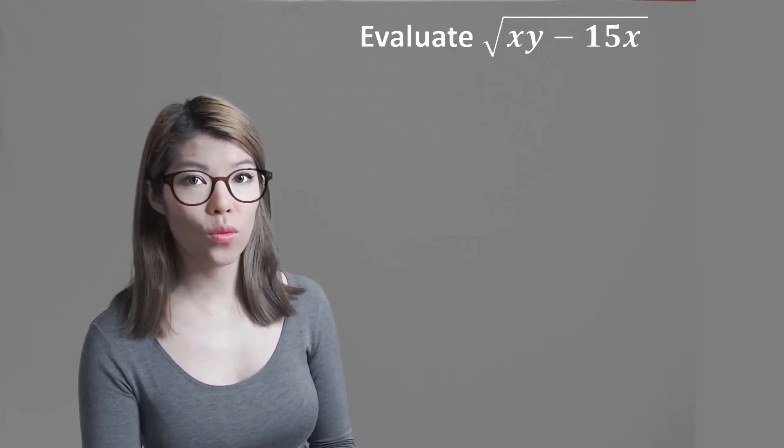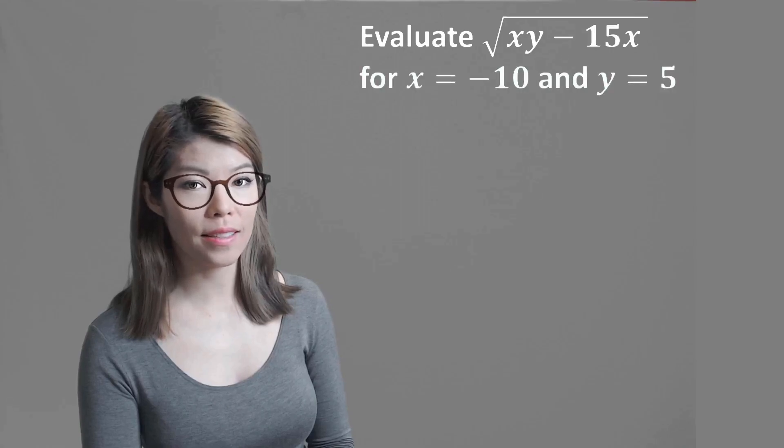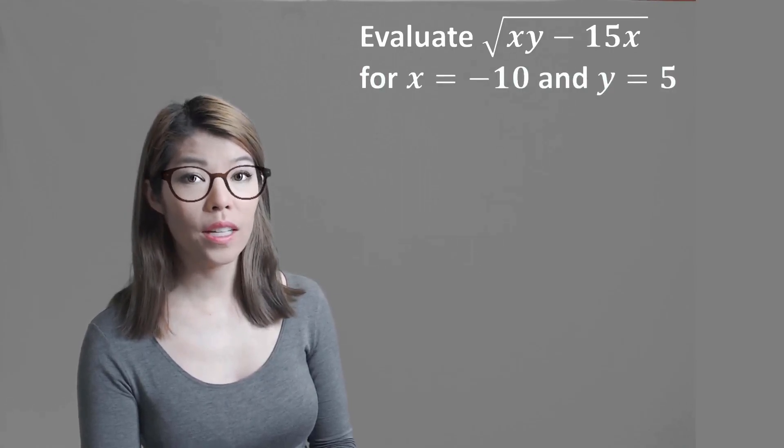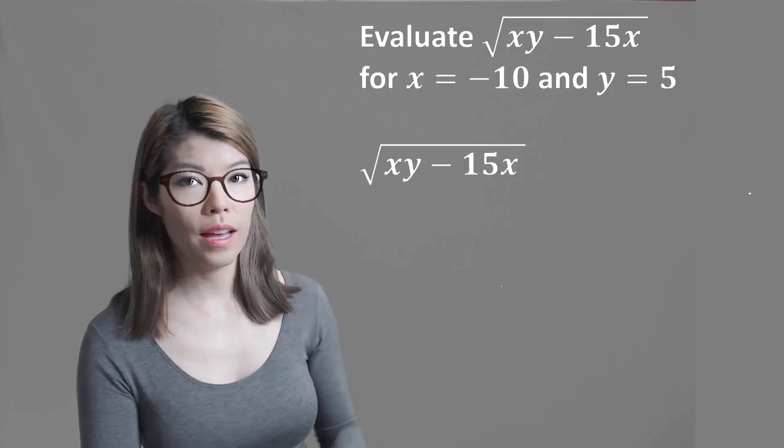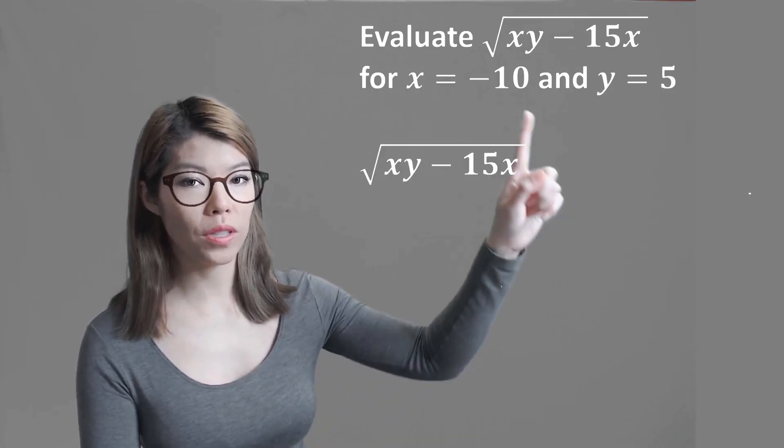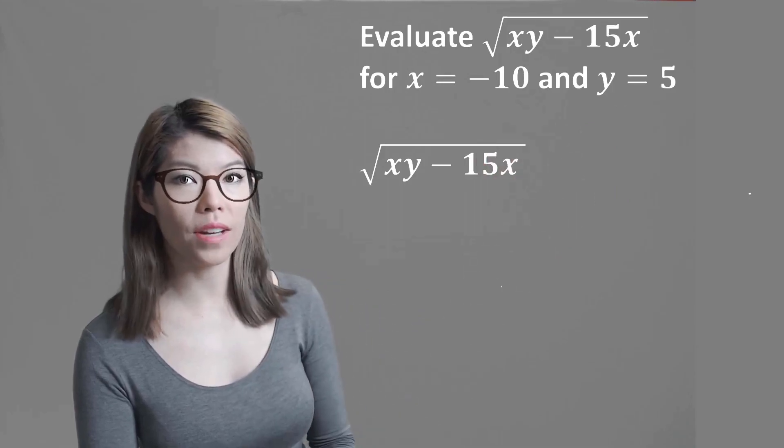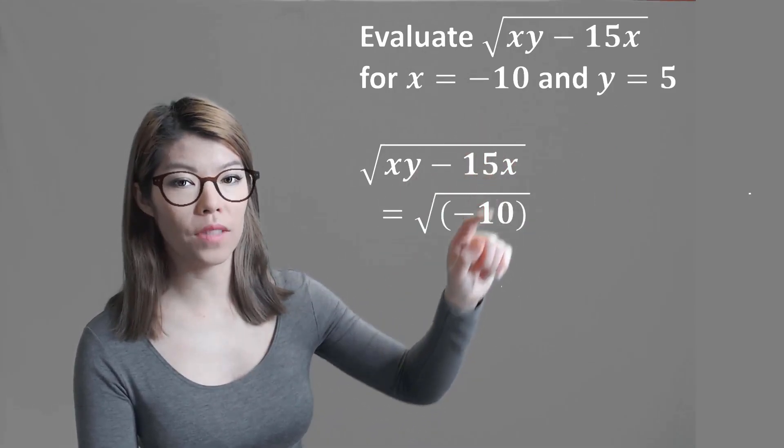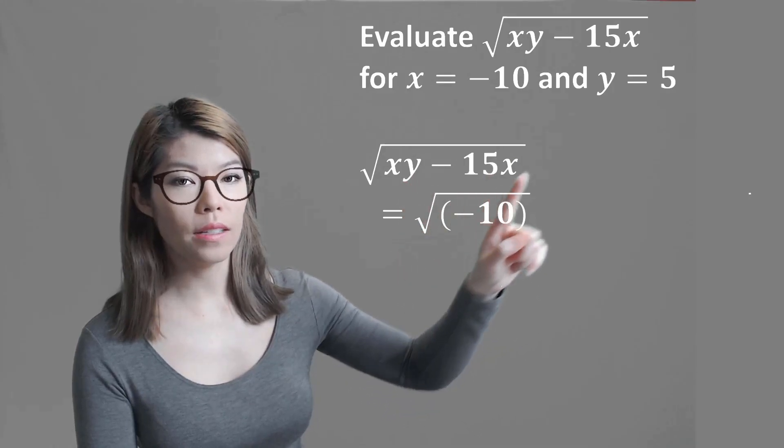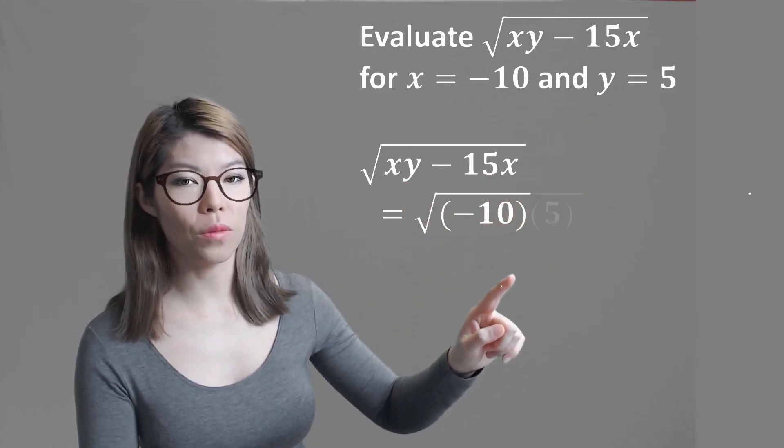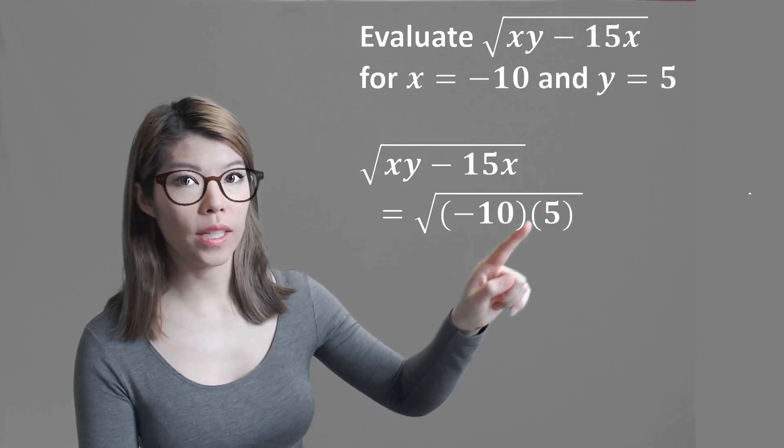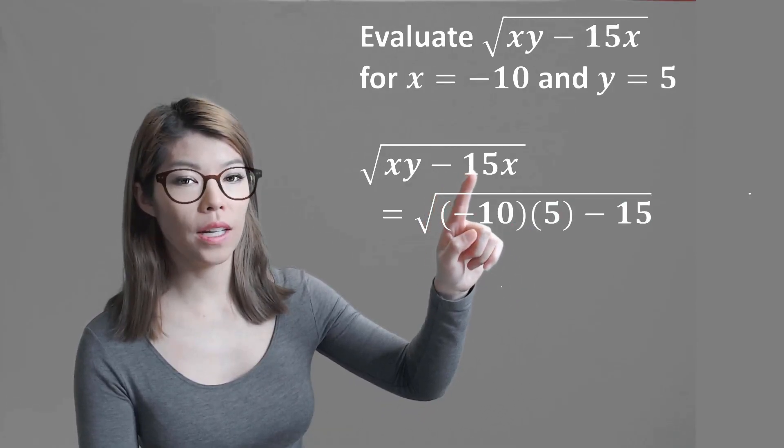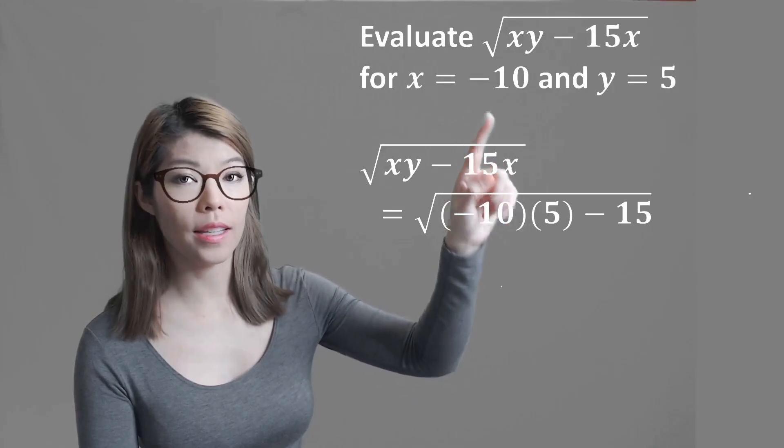Evaluate square root of xy minus 15x for x equals negative 10 and y equals 5. So we write down the expression and then for each of these variables we're going to substitute it with what they've given us. So for x we're going to substitute it with negative 10, and then the y, using brackets, we're going to substitute it with 5. And remember when it's next to each other in brackets it means multiply. Then we have the minus 15 and for x again it's negative 10.